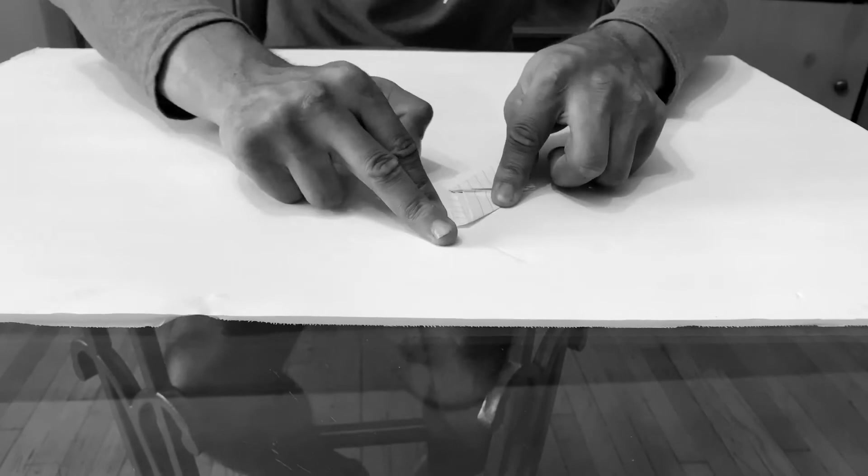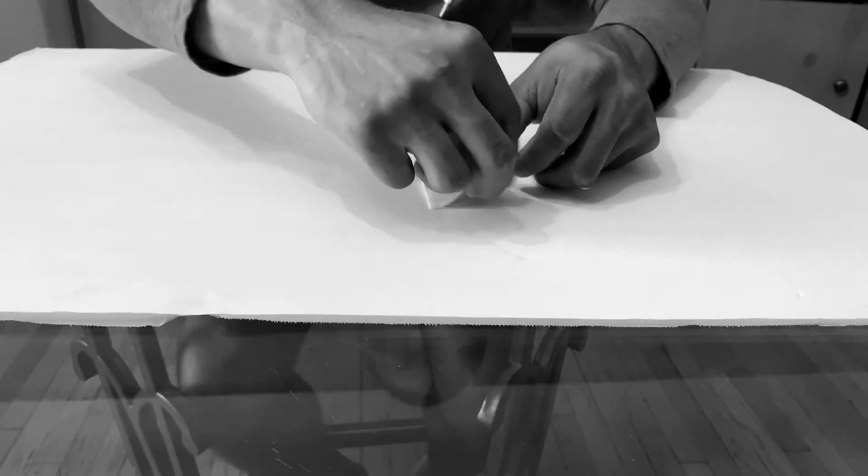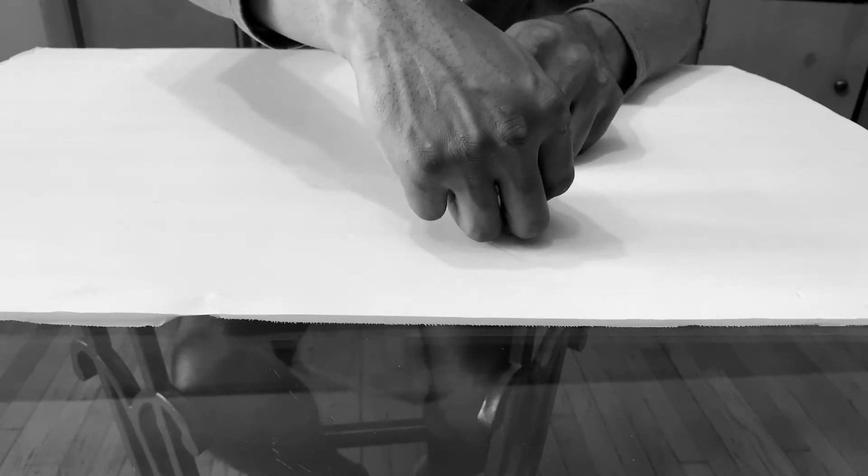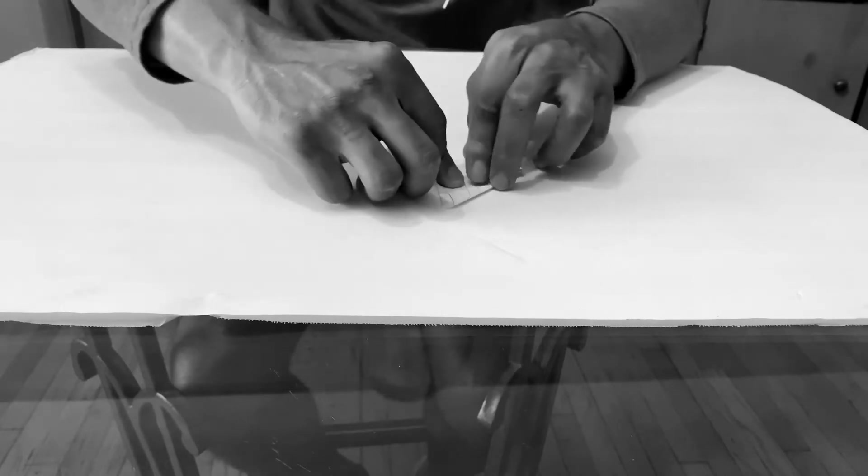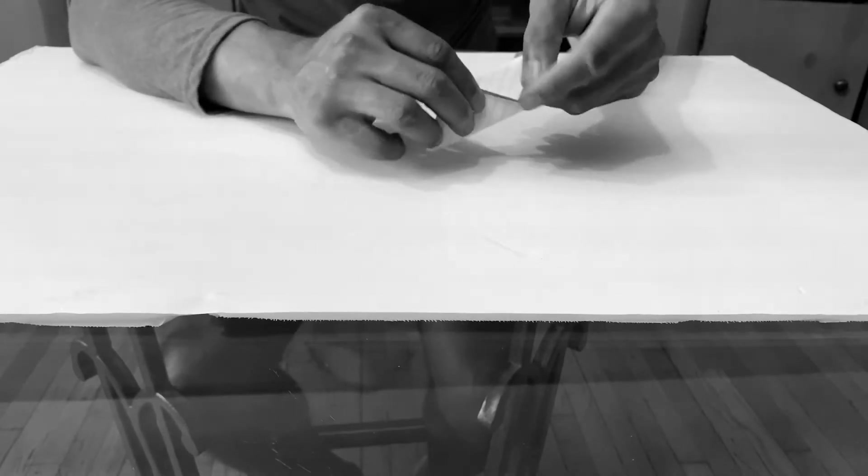fold the left side of the excess paper over. So take the top left part of the excess paper and fold it to the bottom right corner so that it looks like this.